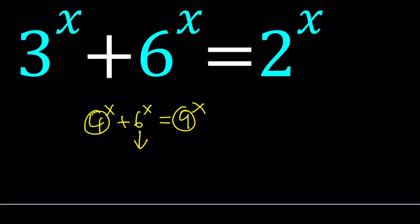So what we usually do with these kinds of equations is divide everything by 9^x, which happens to be the largest base. And that gives us (4/9)^x + (6/9)^x, which is (2/3)^x, and then equals 1.